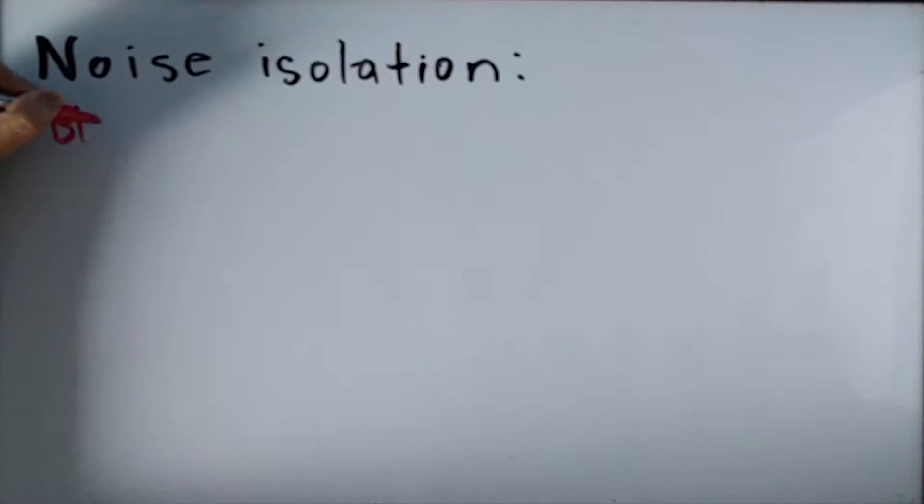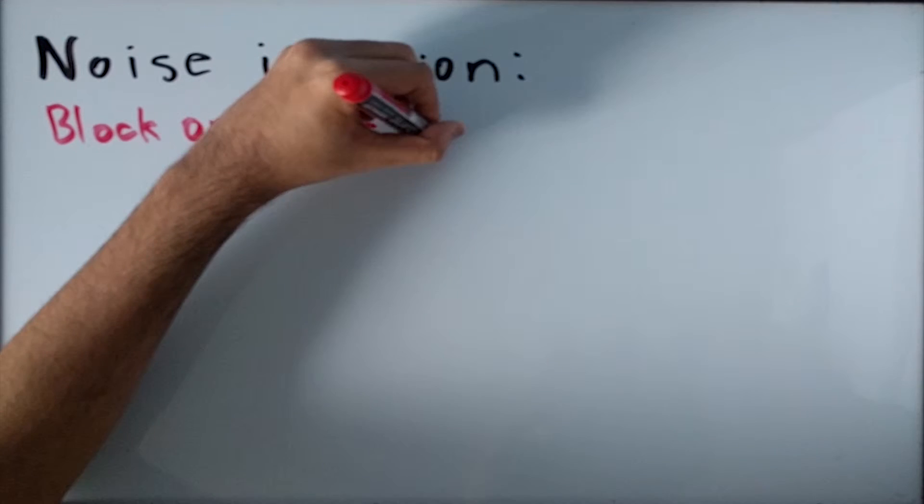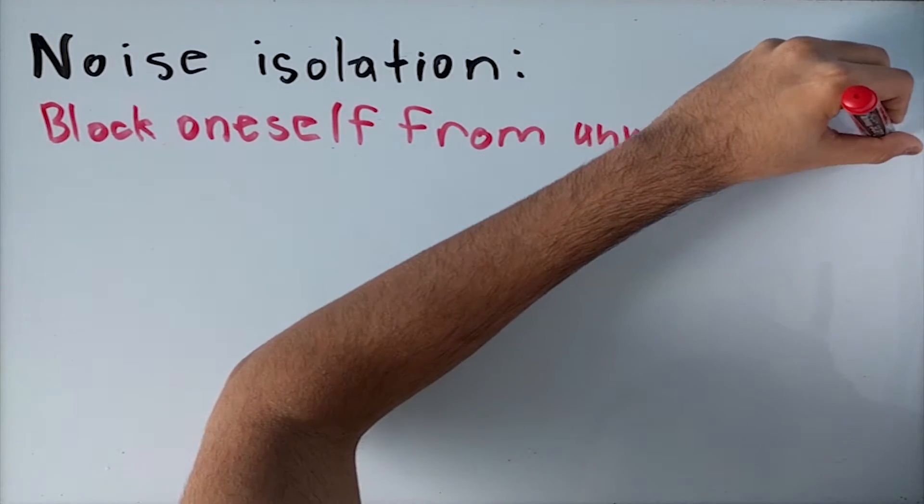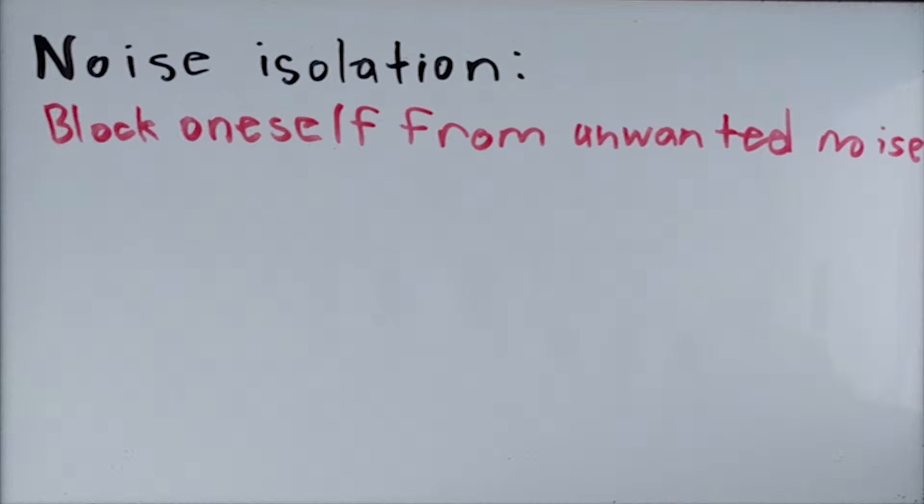First, let's start off with what noise isolation is defined as. In its simplest form, noise isolation simply means to block yourself away from unwanted noise. When you're listening to music, that unwanted noise is the outside world.